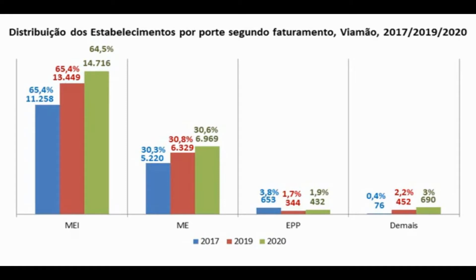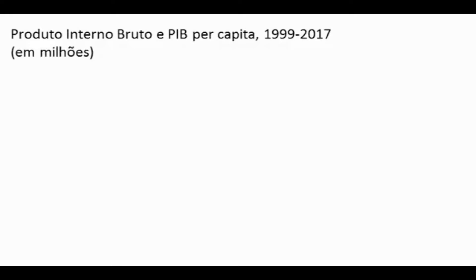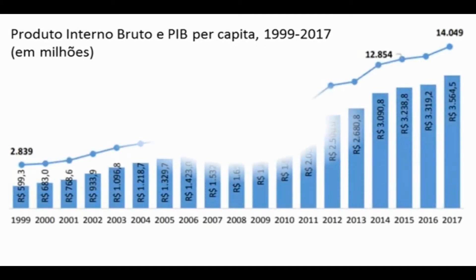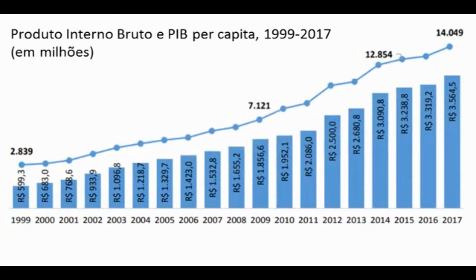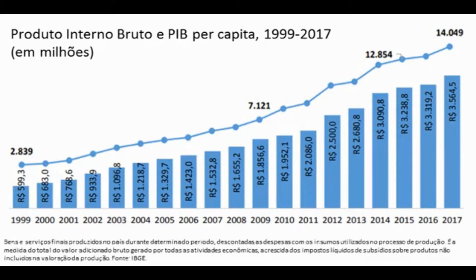Microempresas representam 30,6% dos estabelecimentos em 2020, empresas de pequeno porte 1,9% e os demais tipos 3%. O produto interno bruto e o PIB per capita, no intervalo de 1999 até 2017, apresentam crescimento bem significativo, o que pode ser confrontado com os dados de renda dos domicílios em Viamão. A cidade tem um potencial de geração de riqueza bastante grande, mas uma desigualdade social exponencialmente maior.